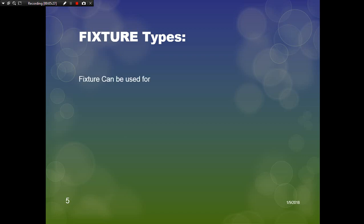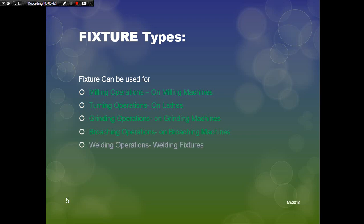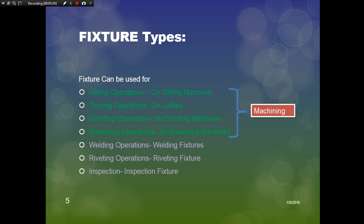Fixture types: fixtures can be used for milling operations on milling machines, turning operations on lathes, grinding operations on grinding machines, broaching operations on broaching machines, welding operations using welding fixtures, riveting operations using riveting fixtures, and inspection fixtures. The first four are machining operations and the last three are non-machining operations.